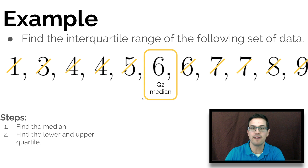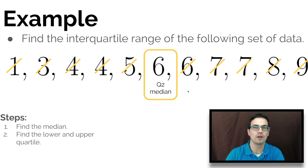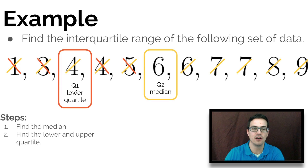From there we want to find the lower and upper quartile. We'll find the median of the bottom half of the data and the median of the top half of the data — those represent our lower quartile and upper quartile. For the bottom half, I get rid of the 1 and the 5, then the 3 and the 4, and we're left with 4, which is our Q1 or lower quartile.